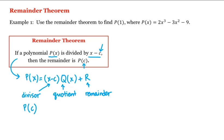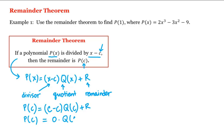Now let's evaluate p at c. That is, p of c is equal to — putting c everywhere we see x — c minus c times q of c, plus r. So p of c equals zero times q of c plus r, which means p of c is indeed this remainder r.